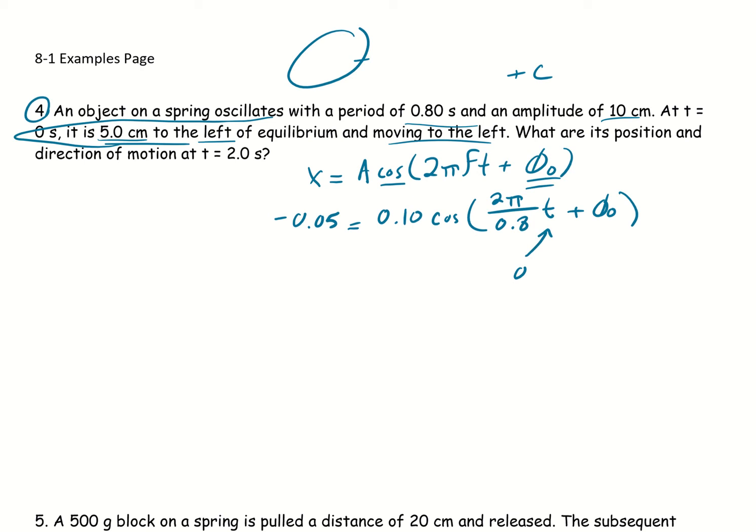And obviously that simplifies this a lot. We have to be careful that it doesn't simplify it all the way. So negative 0.05 equals 0.10 cosine of, this would be, this whole first chunk would be 0, but then plus my phase constant, as I'm solving for that. So then just solve from here.